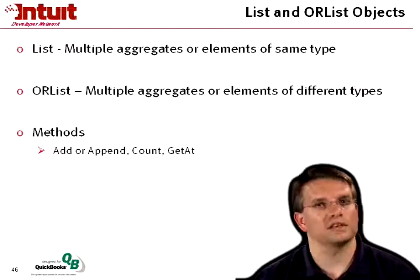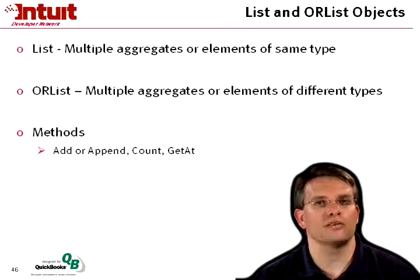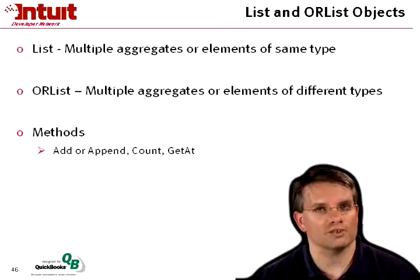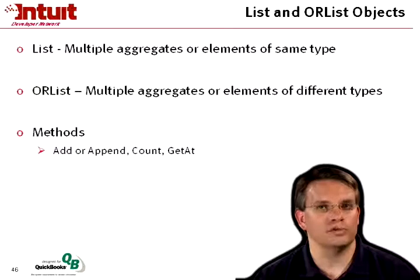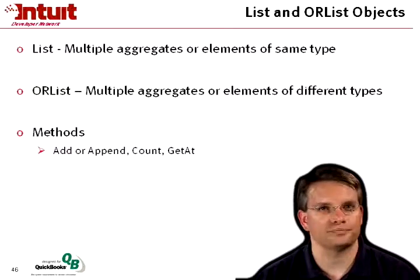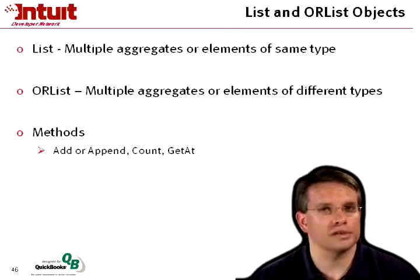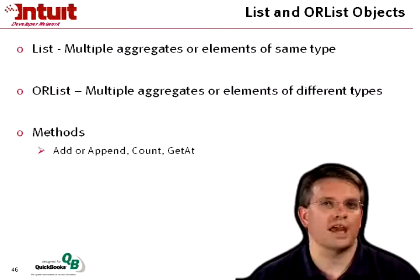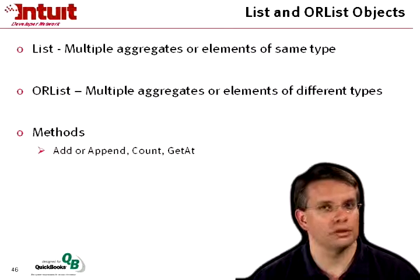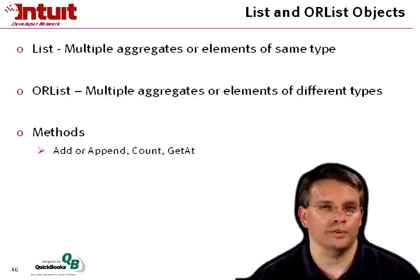Then there's the Or list, and this is a unique beast. It contains multiple aggregates or elements of different types where it has to be unique. It's mutually exclusive. You see that in, for example, an invoice that can have either an item line that gets added or an item group line. We'll see that in a few minutes.